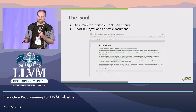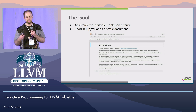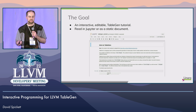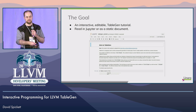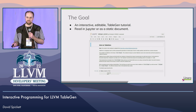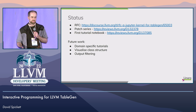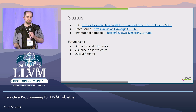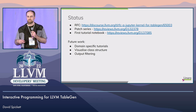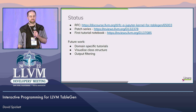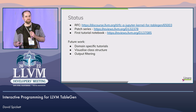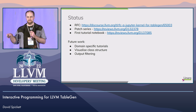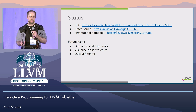My goal with this initially is to produce an interactive, editable TableGen tutorial — or more realistically, a set of tutorials — to make them digestible. You should be able to read it in Jupyter, as you can see in the screenshot, or as a static document just by going to the GitHub repo. The status is that there is an RFC for the initial work, so if you have feedback from today, you can put that there and see other people's ideas. The kernel is in review — I'm leaving it there until it's mature enough to support a good set of tutorials. The first tutorial notebook, going from the basics up to multi-classes, is also in review.